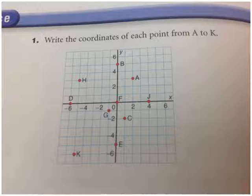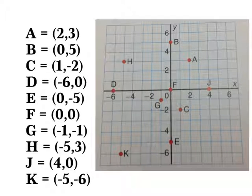Okay, so the points were like this. Point A was at (2, 3), point B is at (0, 5), point C is at (1, -2),